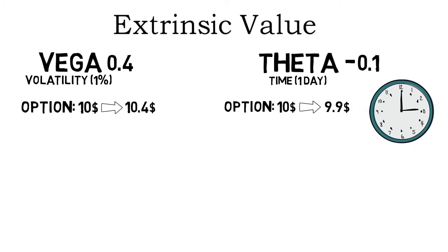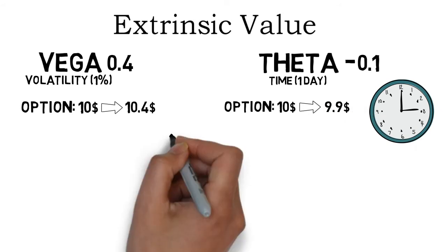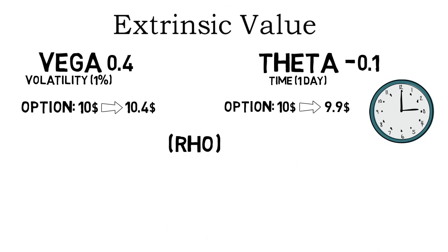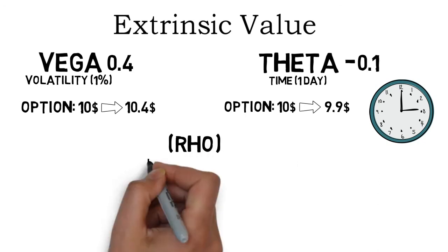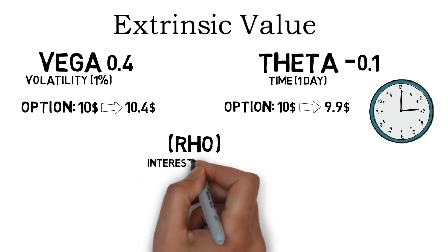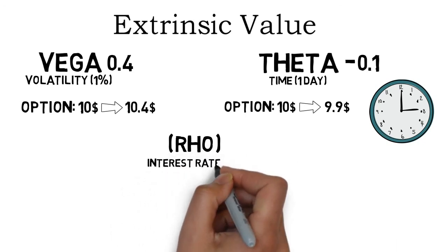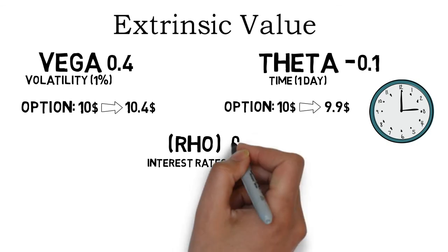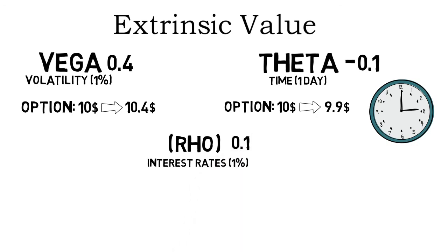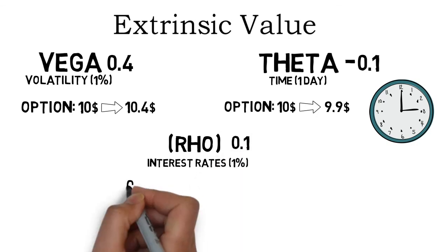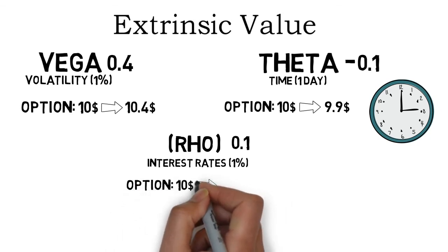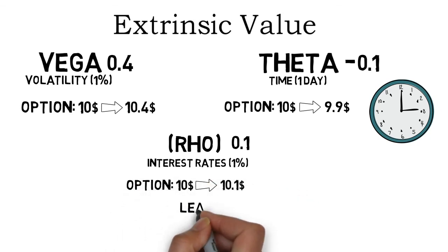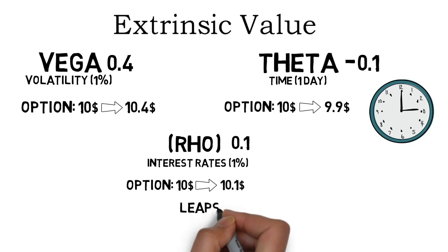Additionally there are some other less important Greeks, like Rho. Rho measures the change in the option's price per 1% change in interest rates. But this can be disregarded as long as you don't plan on trading any very long-term options, also known as LEAPS.